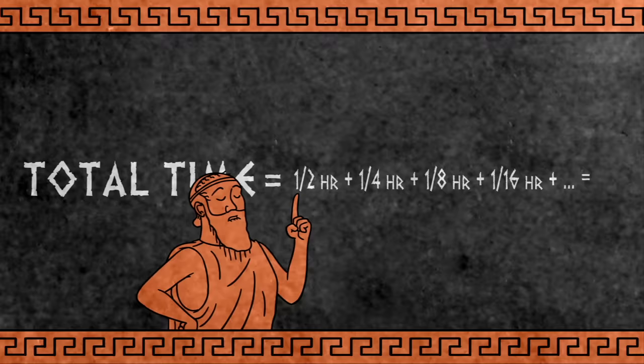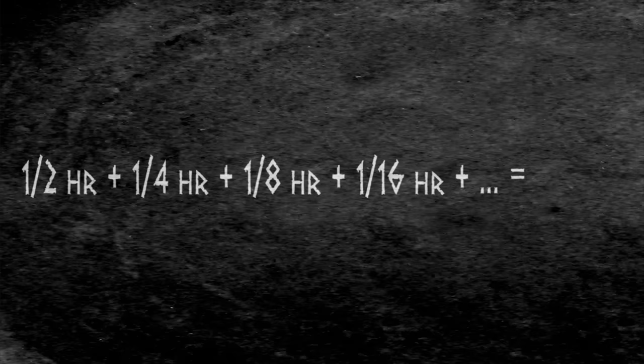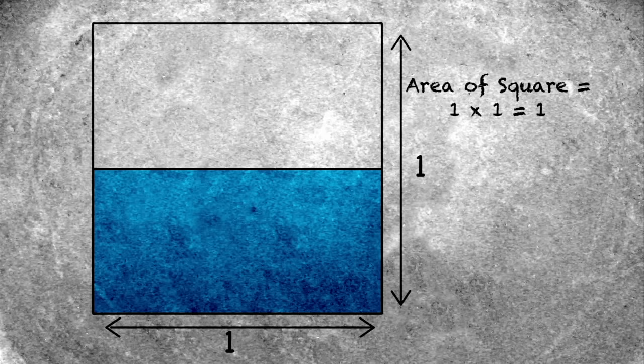This is the problem with Zeno's argument. As mathematicians have since realized, it is possible to add up infinitely many finite-sized terms and still get a finite answer. How, you ask? Well, let's think of it this way.